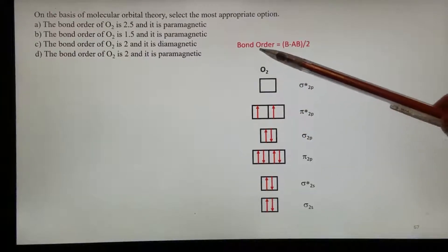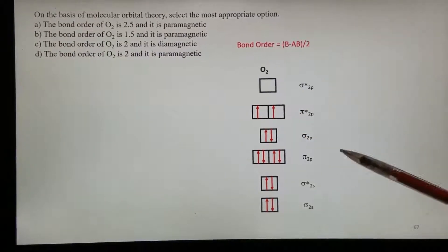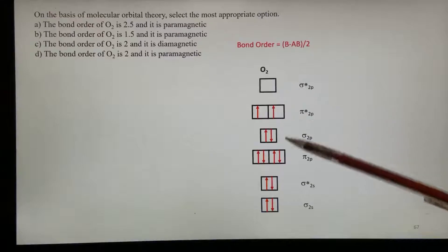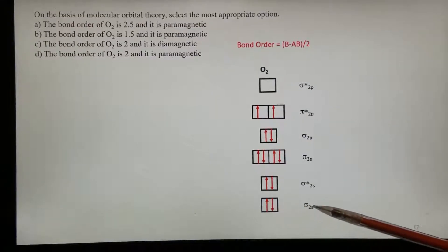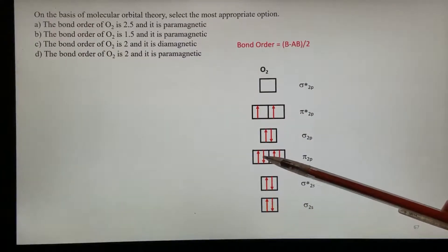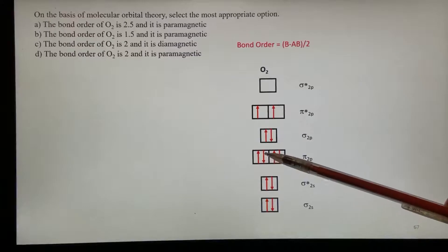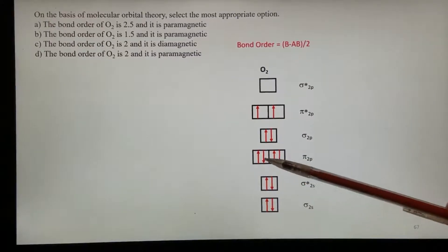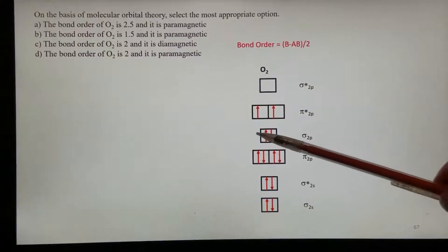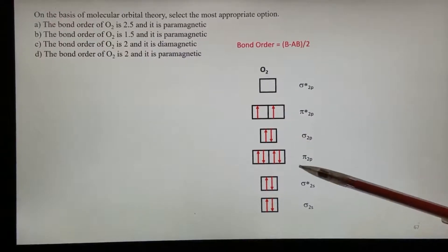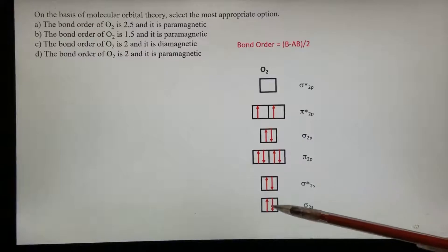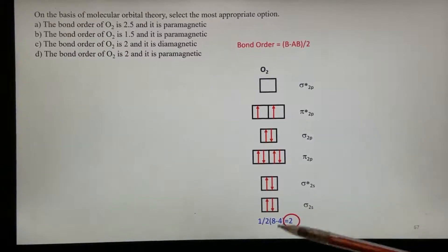Now we're ready to calculate the bond order. The number of bonding electrons: we have 2 here, plus 4, that's 6. Then here, another 2, that's 8 total bonding electrons.